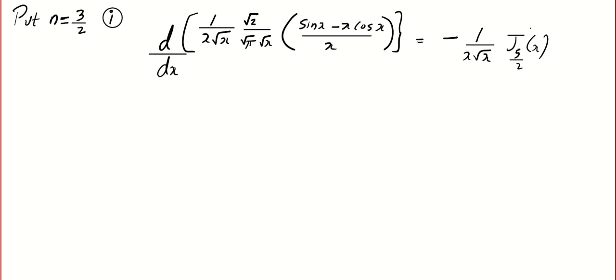We are almost there, only thing is we have to differentiate. Just like before I'm going to take √2/√π outside. So we get √2/√π and d/dx of x·√x·√x into (sin x - x cos x)/x³.